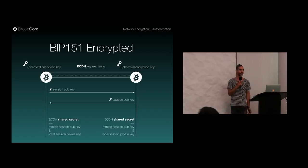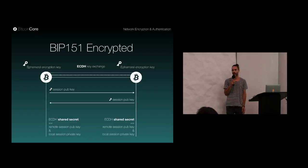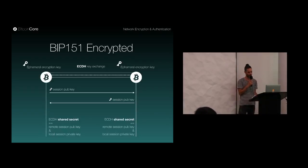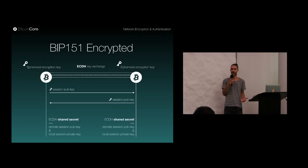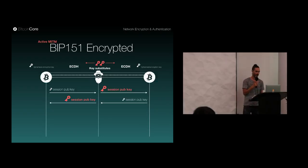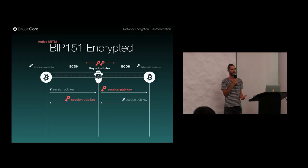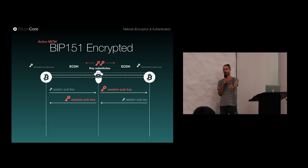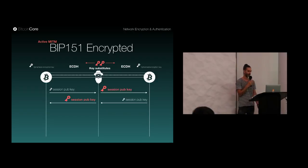How does it work? It's a standard form of creating a secure channel. There are two session keys created on each side — one for each direction. An ephemeral session key is created and shared over an EC Diffie-Hellman key exchange in order to calculate the shared secret on both sides. There is still the possibility of an active man-in-the-middle, meaning a malicious peer or ISP that spun up a peer — you think you're talking to the right peer but you're actually talking to the ISP proxying it forward.